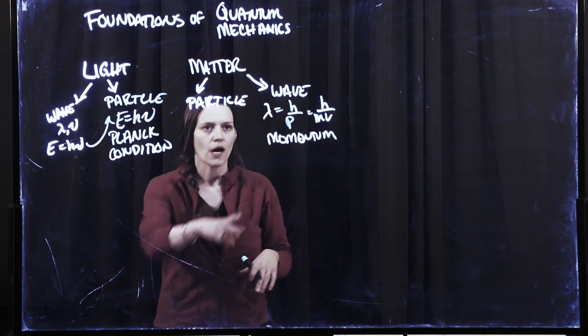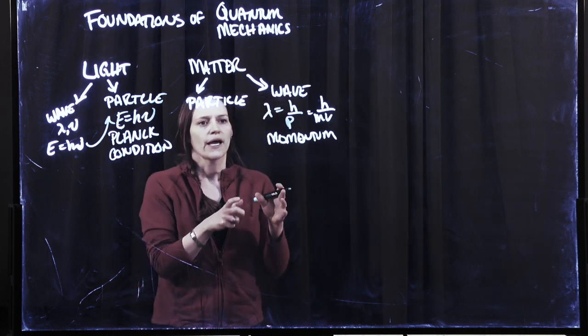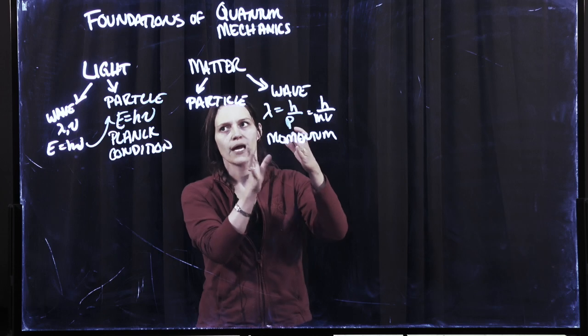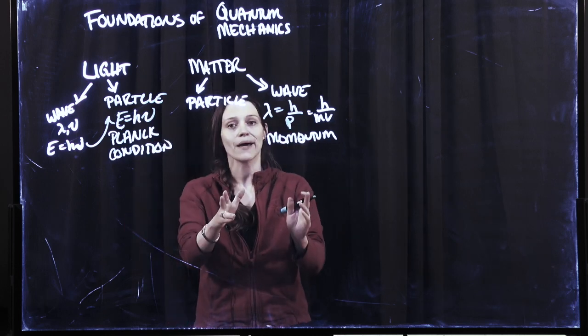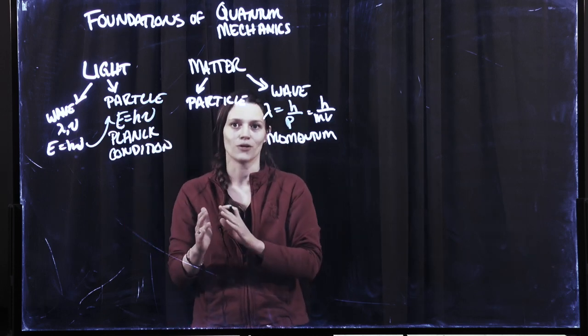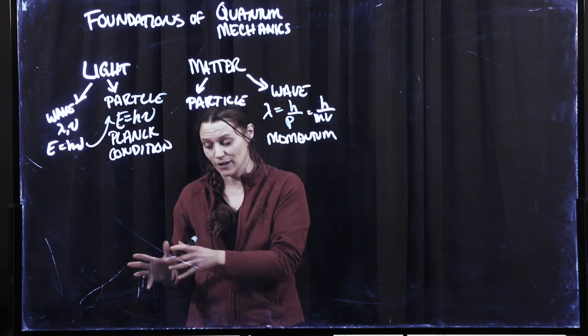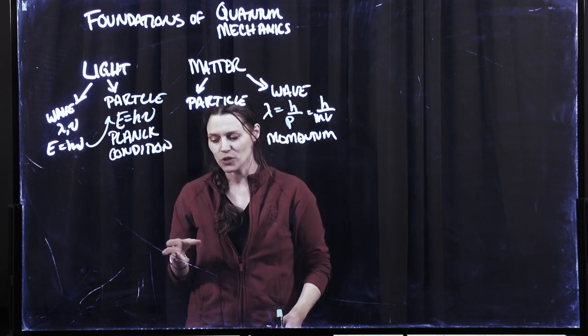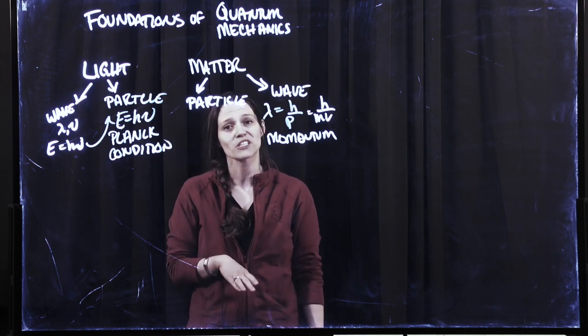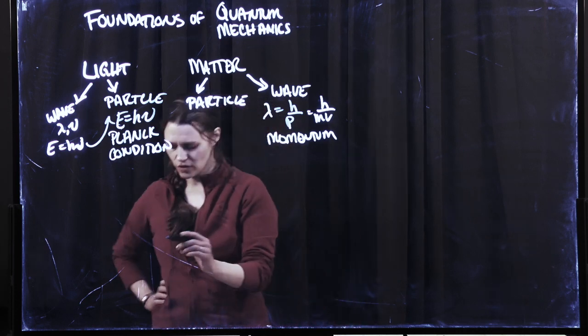And so h is Planck's constant, and so now we have light acting as a wave and a particle, but matter also acting as a wave and a particle. So wave-particle duality throughout both types, matter and light. And so some really cool results were found from the Davison-Germer experiment, and this is where they took...